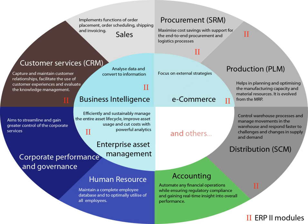ERP systems connect to real-time data and transaction data in a variety of ways. These systems are typically configured by systems integrators, who bring unique knowledge on process, equipment, and vendor solutions. Direct Integration: ERP systems have connectivity as part of their product offering, which requires that the vendors offer specific support for the plant floor equipment their customers operate. ERP vendors must be experts in their own products and connectivity to other vendor products, including those of their competitors.